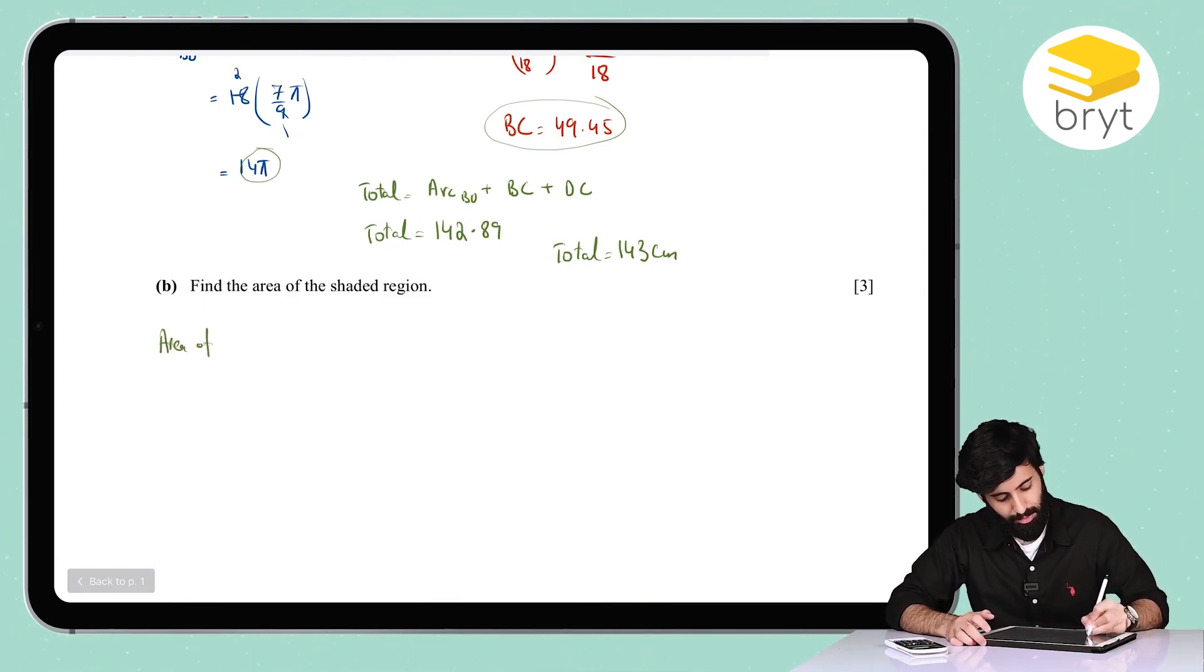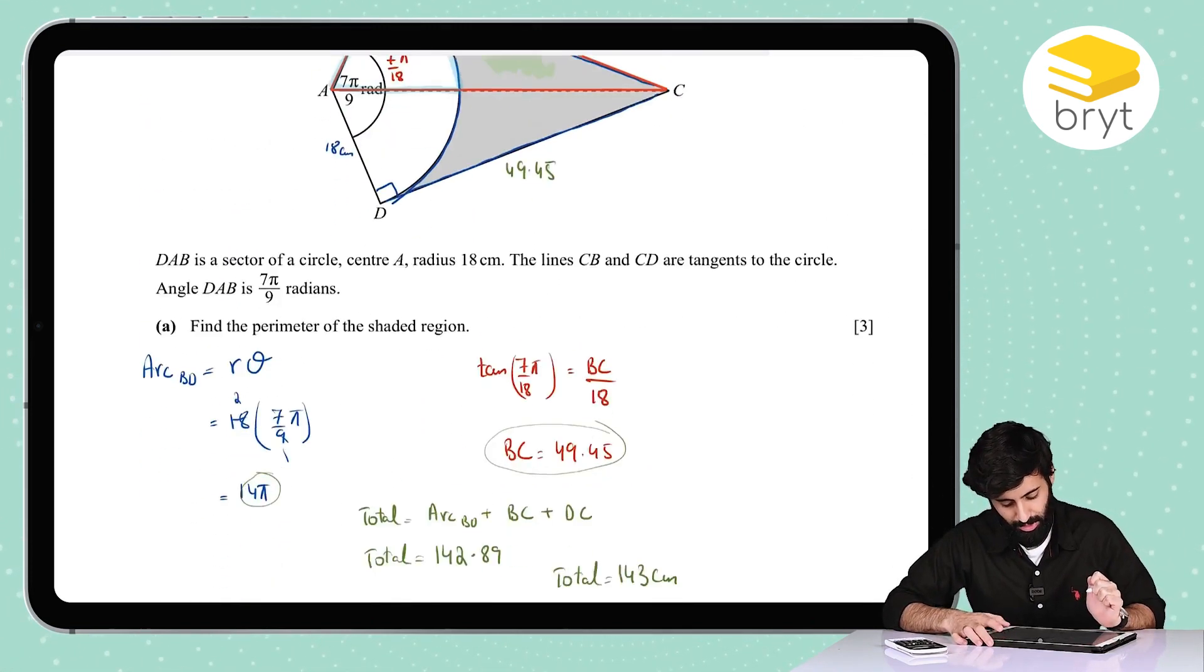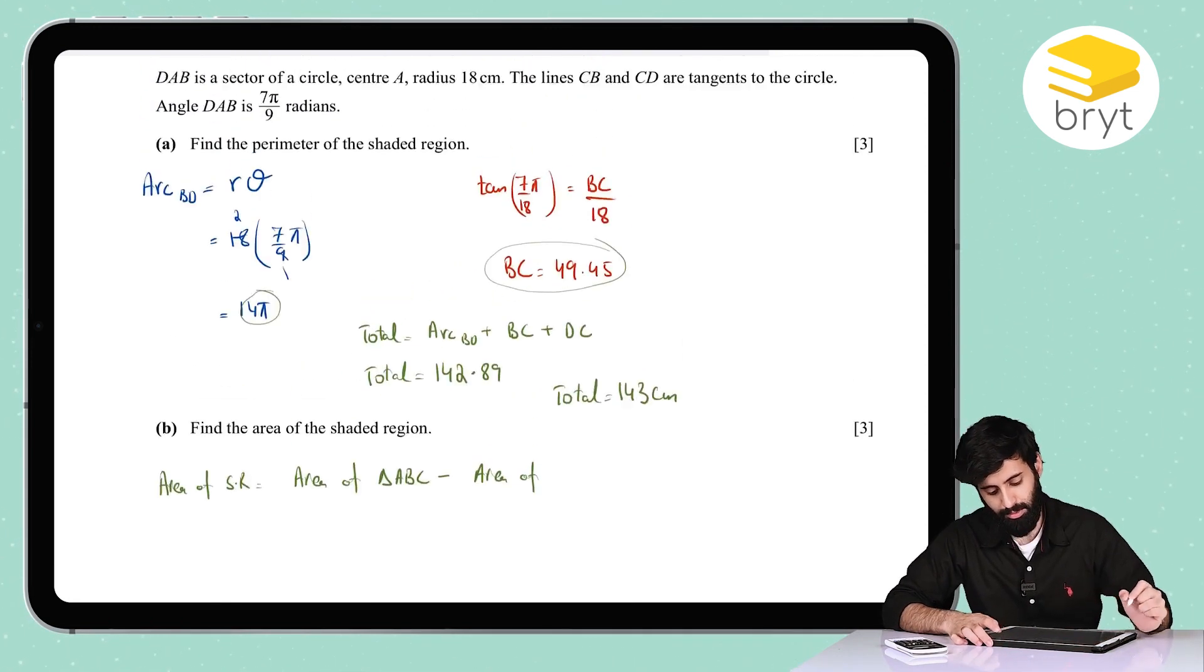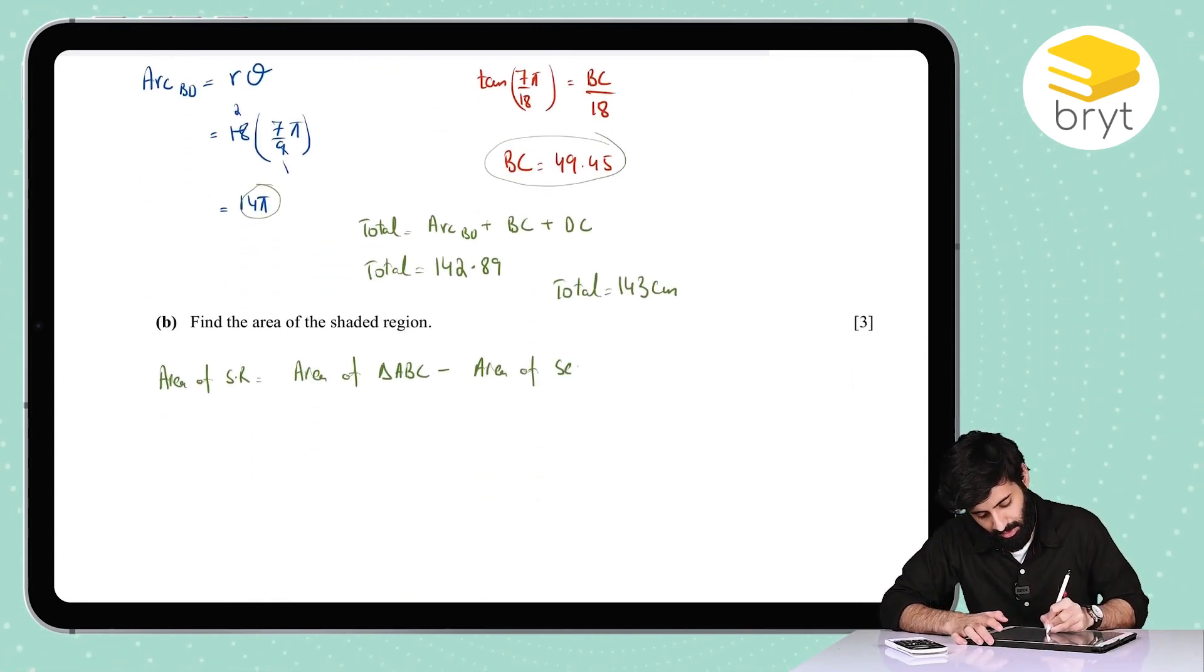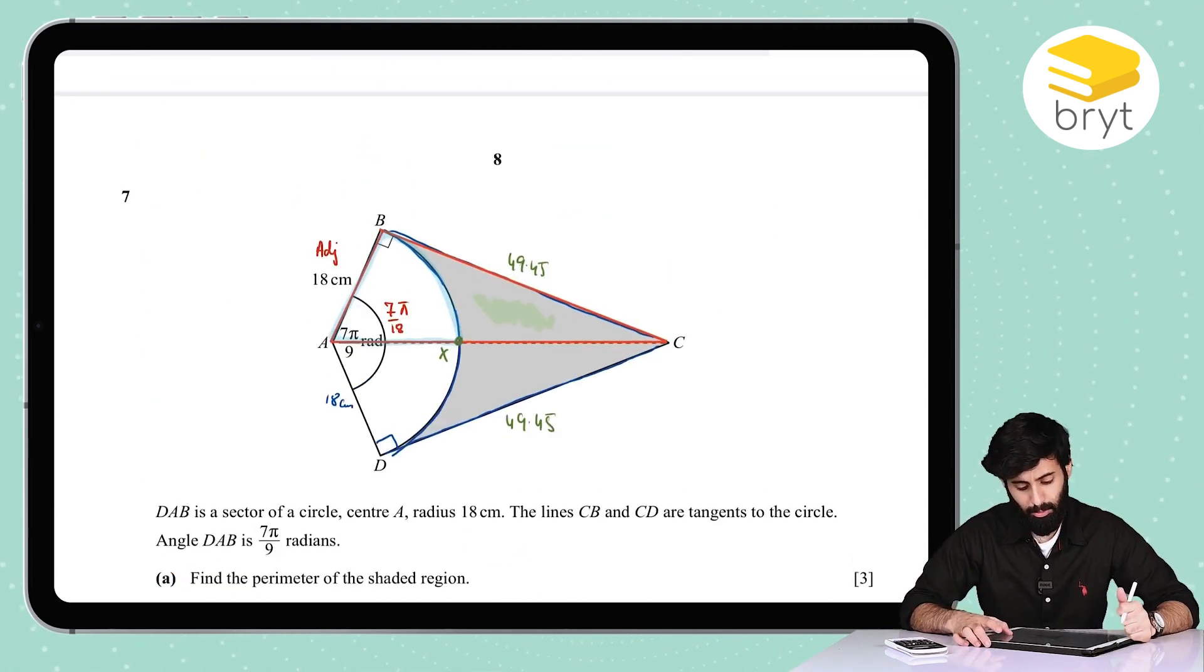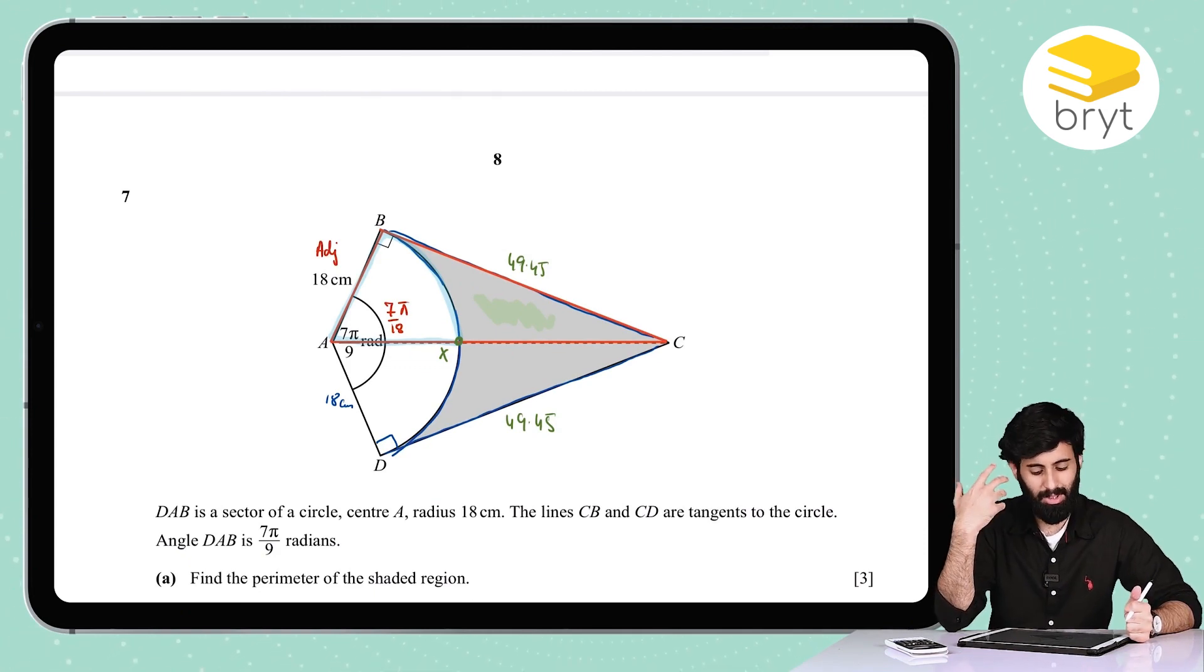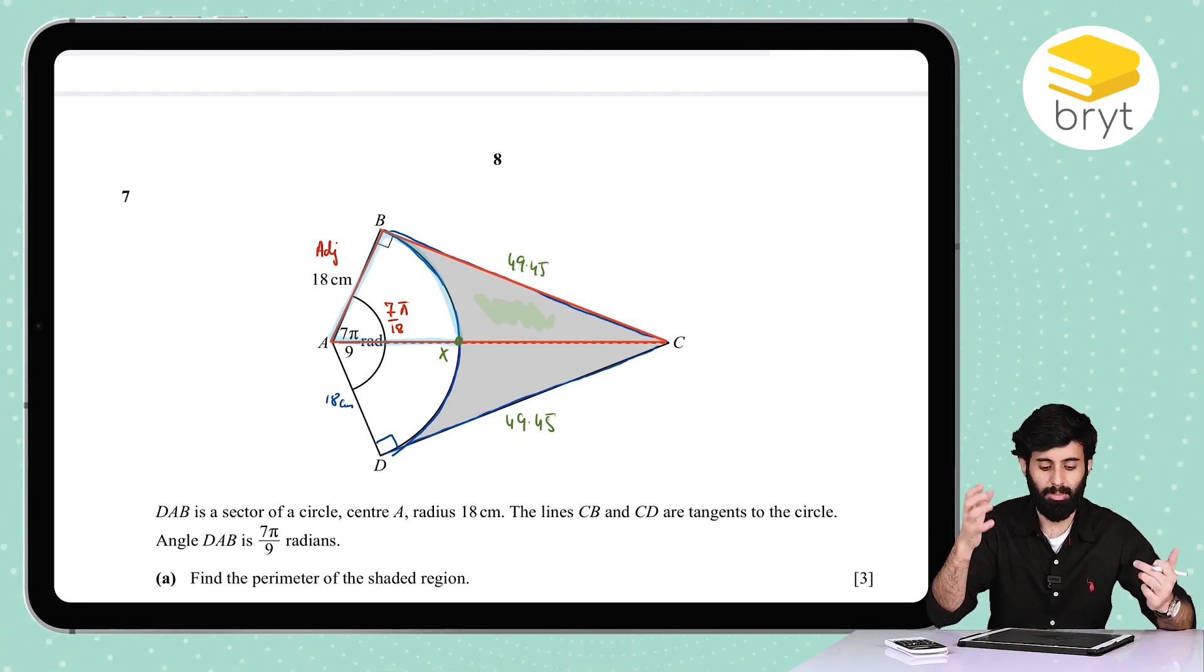Let's do that. Let's first write that down. Area of shaded region is equals to area of triangle ABC minus the area of the sector. Which sector are we talking about here? If I call this point X, we're talking about BAX, area of sector BAX. And once we have this, we're going to multiply it by two. Or if you want, you can first find out the area of the entire shape, which is a quadrilateral, and then from it subtract the area of the sector. But since we neither have the area of the entire sector nor do we have the area of the entire shape, it's just best to break it up this way.